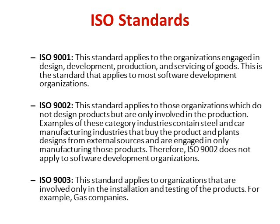ISO 9002 applies to organizations that do not design products but are only involved in production, such as industries like steel or car manufacturing that buy designs from external sources and are only engaged in manufacturing. It does not apply to software development organizations. ISO 9003 applies to organizations involved in the installation and testing of products, such as gas companies.